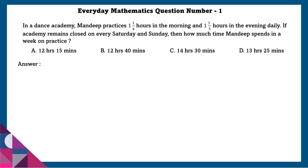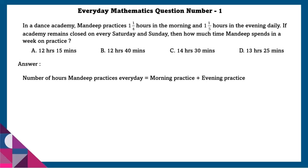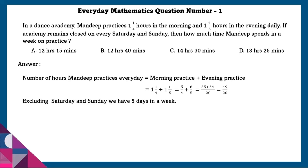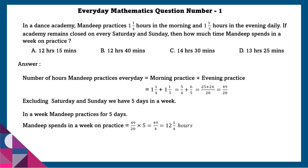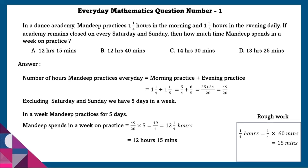Question 1: In a dance academy, Mandeep practices 1 and 1/4 hours in the morning and 1 and 1/5 hours in the evening daily. If the academy remains closed on every Saturday and Sunday, how much time does Mandeep spend in a week of practice? Number of hours Mandeep practices every day equals morning practice plus evening practice, that is 49/20. Excluding Saturday and Sunday, in a whole week we have 5 days. So in a week, Mandeep spends 12 and 1/4 hours practicing, that is 12 hours 15 minutes.